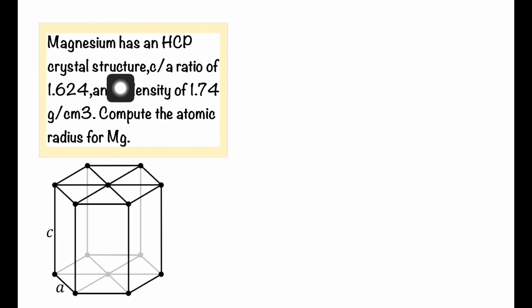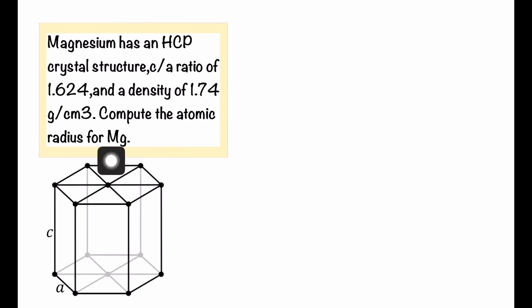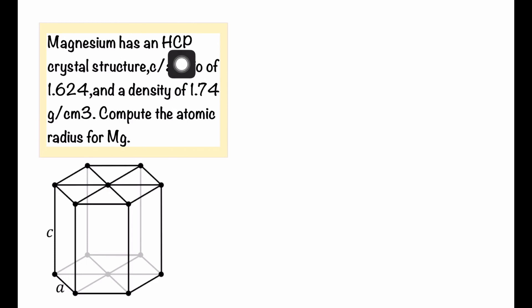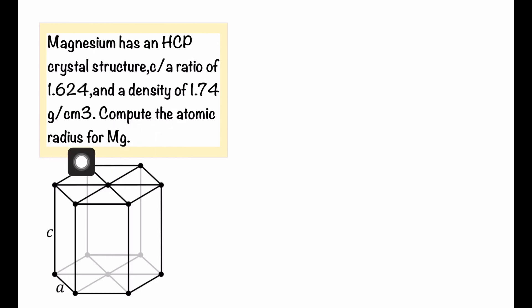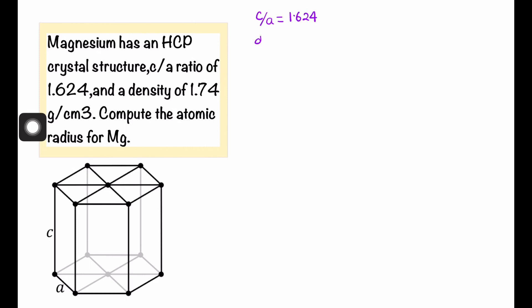Magnesium has an HCP crystal structure with a c/a ratio of 1.624 and a density of 1.74 gram per cc. In this problem, we are given that magnesium metal has a hexagonal close-packed (HCP) crystal structure, the c/a ratio is 1.624, the density is 1.74 g/cc, and we have to calculate the atomic radius r for magnesium.